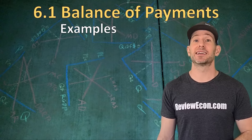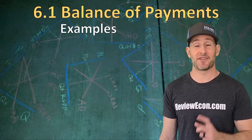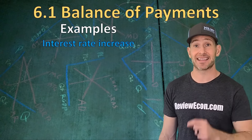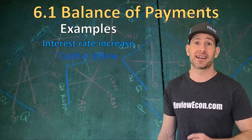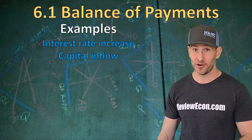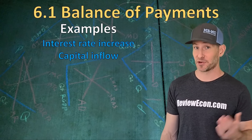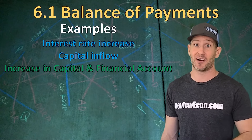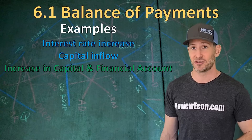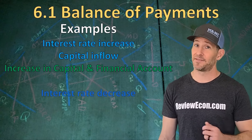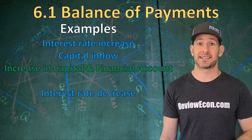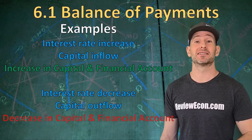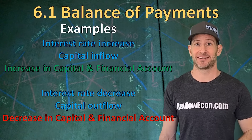For another example, let's look at interest rates. If interest rates within a country increase, then foreign investors will seek that higher interest rate. The United States will have a capital inflow — that's financial capital coming into the economy — and that will increase the capital and financial account as foreign investors purchase United States bonds and other assets. If the United States had a decrease in the interest rate instead, we would see a capital outflow, and that would cause a decrease in the capital and financial account.